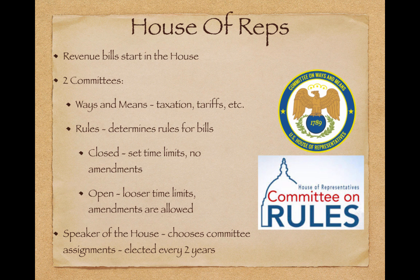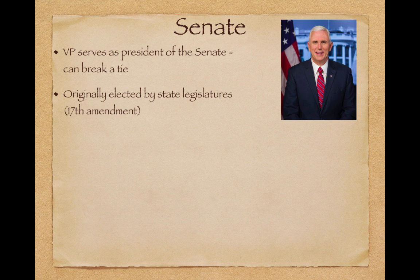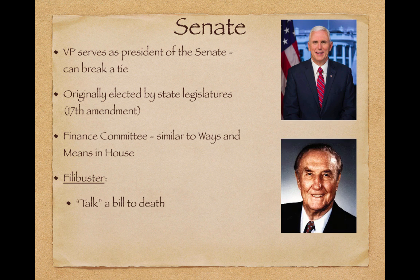In the Senate, the Vice President serves as the President of the Senate and can break a tie in case of a 50-50 split. Originally senators were elected by state legislatures until the 17th Amendment during the Progressive Era in the 1910s. The Finance Committee is similar to the Ways and Means Committee in the House. A filibuster — make sure you understand this — is a special power given only to the Senate, which allows senators to talk a bill to death, like Strom Thurmond did in the 1950s. As long as someone is talking, there will be no voting on a bill, and this can be dragged out for hundreds of days.